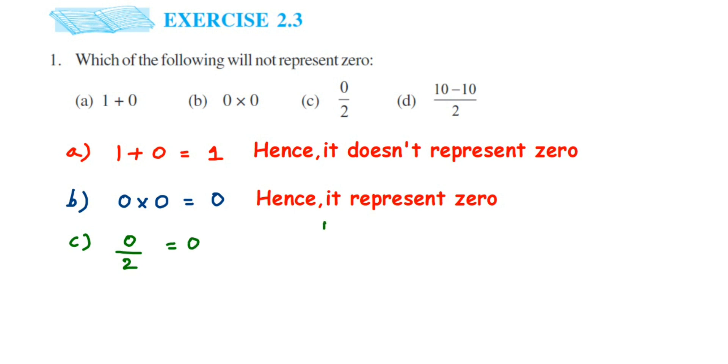So we are going to get the same answer here. Hence it represents zero because we got the answer 0. It does not matter if 0 is divided by 2 or 3 or 100 or any number. Whenever you are dividing 0 by any number, you always get 0 as an answer.